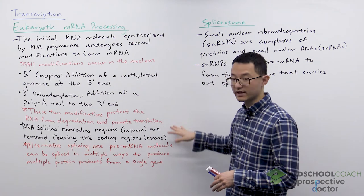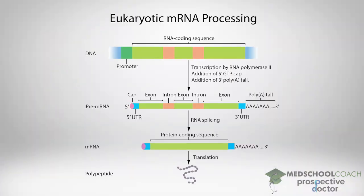There are three key modifications: the addition of a 5' cap, a 3' poly-A tail, and RNA splicing.